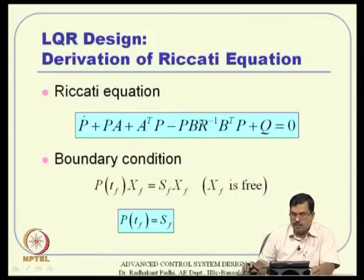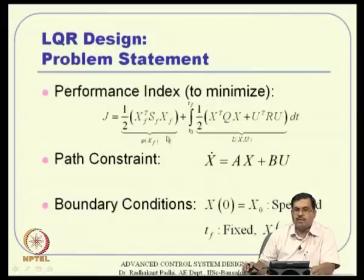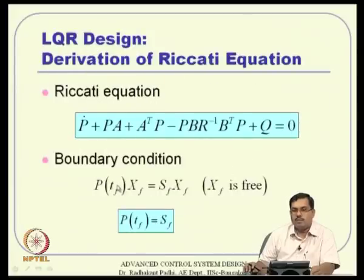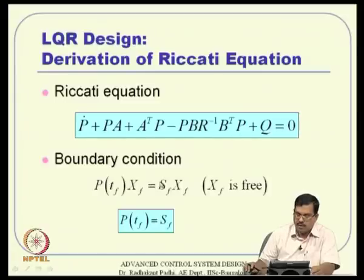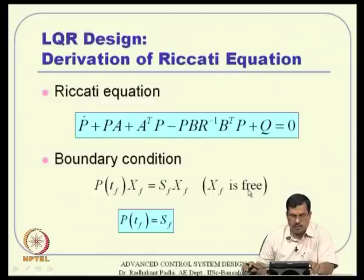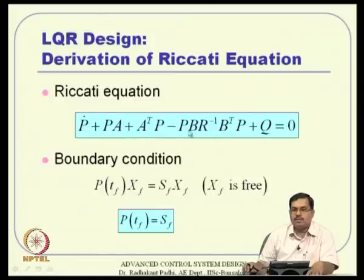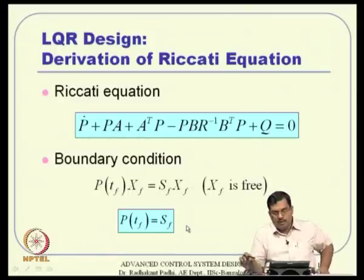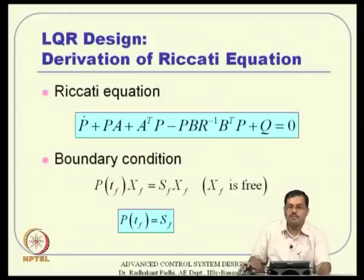To integrate the differential Riccati equation, we need a boundary condition. From λ(tf) = Sf xf and λ(tf) = P(tf) x(tf), since xf is free and nonzero in general, we obtain P(tf) = Sf. So we have a matrix differential equation with its own boundary condition at tf, which is completely independent of the state initial condition.